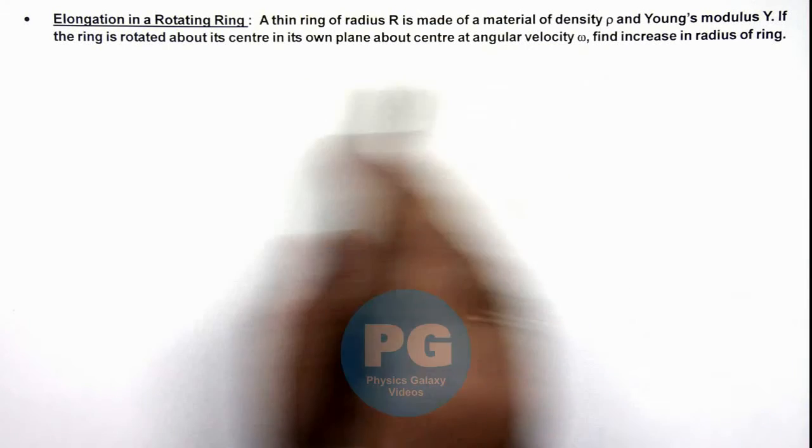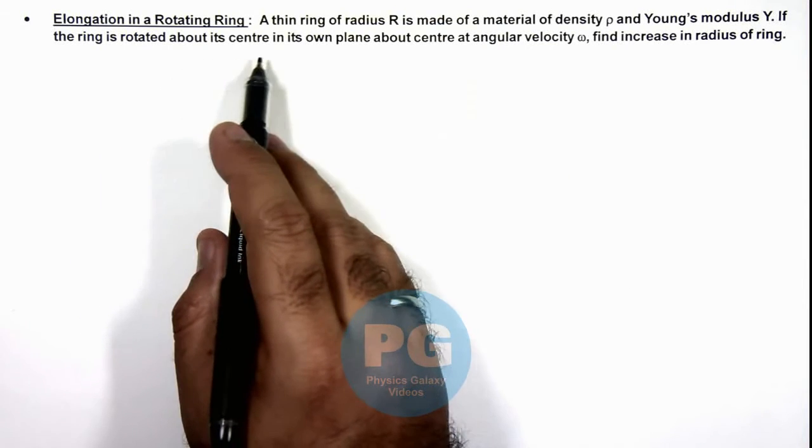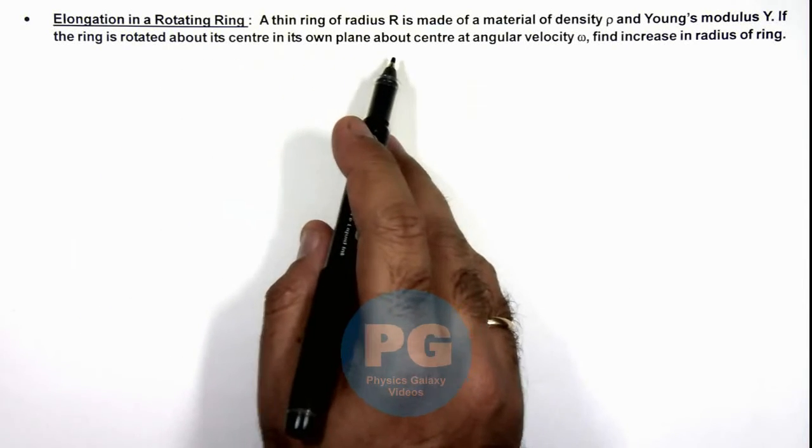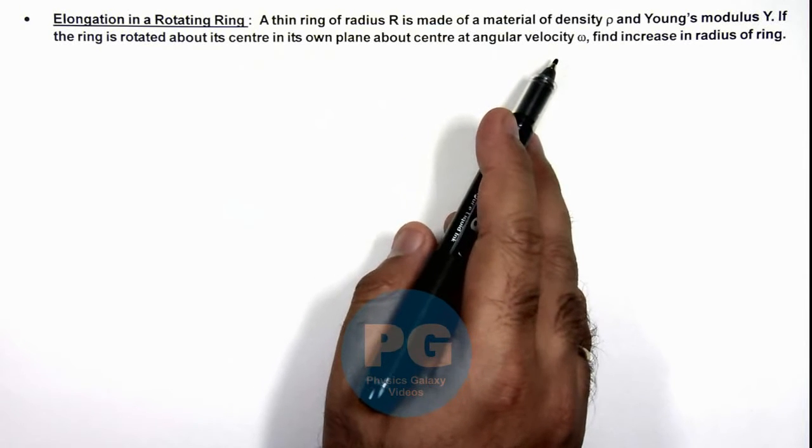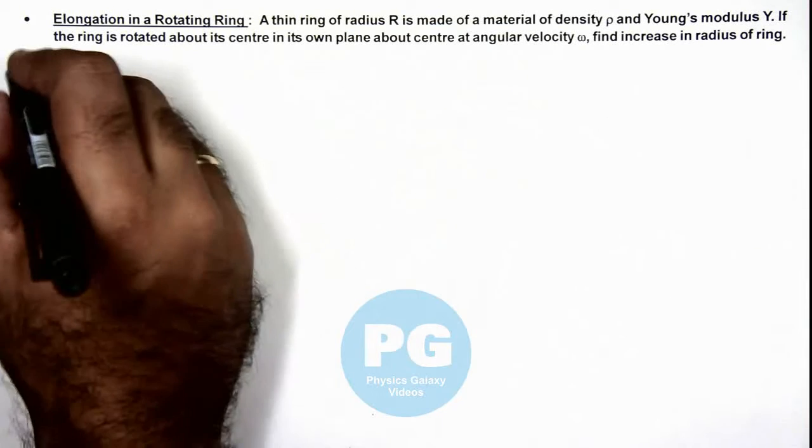If the ring is rotated about its center in its own plane at angular velocity ω, we are required to find the increase in the radius of ring.